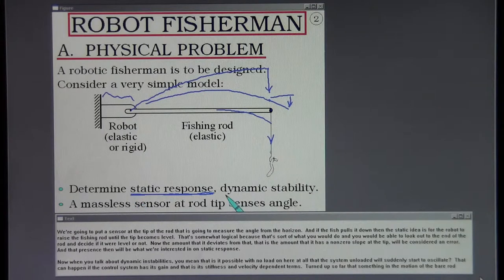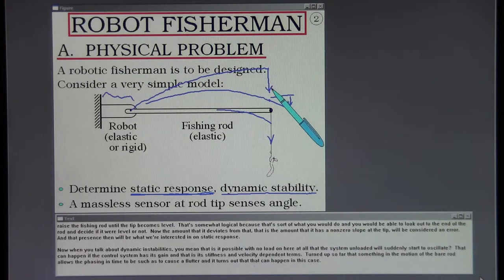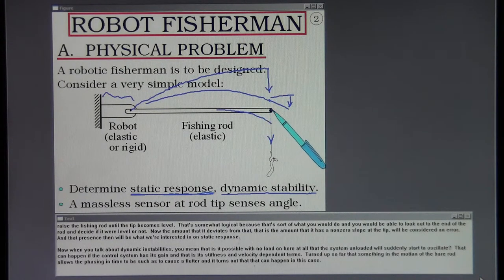Now when you talk about dynamic instabilities, you mean is it possible with no load on here at all, that the system unloaded will suddenly start to oscillate. That can happen if the control system has its gain, that is its stiffness and velocity dependent terms, turned up so far that something in the motion of the bare rod allows the phasing in time to be such as to cause a flutter. And it turns out that can happen in this case.